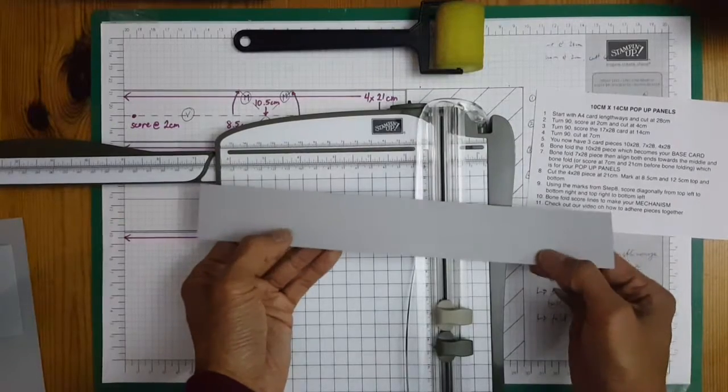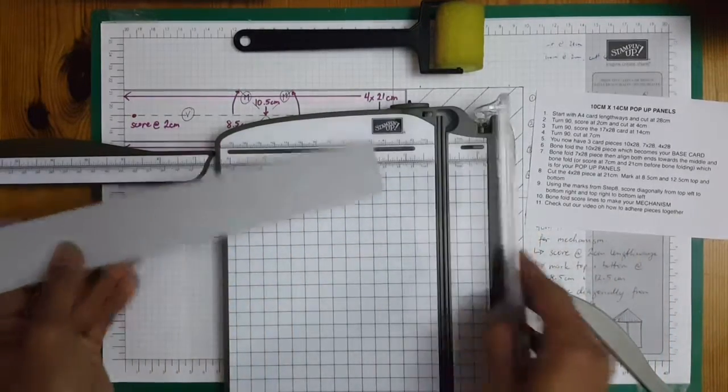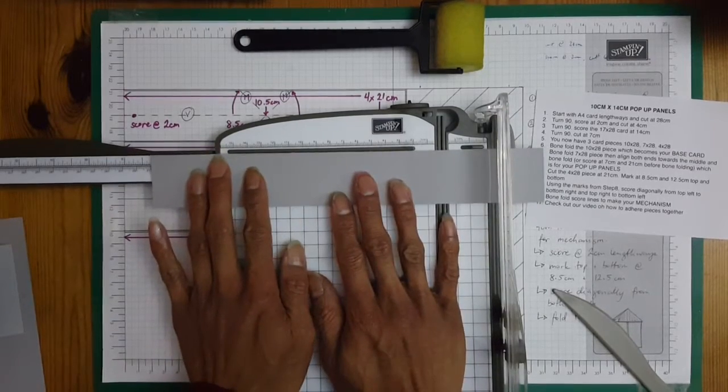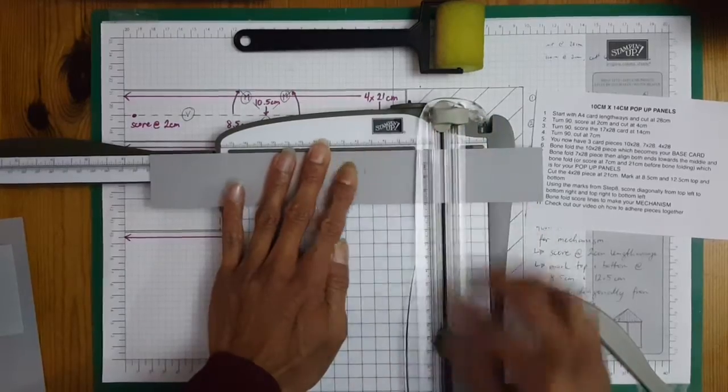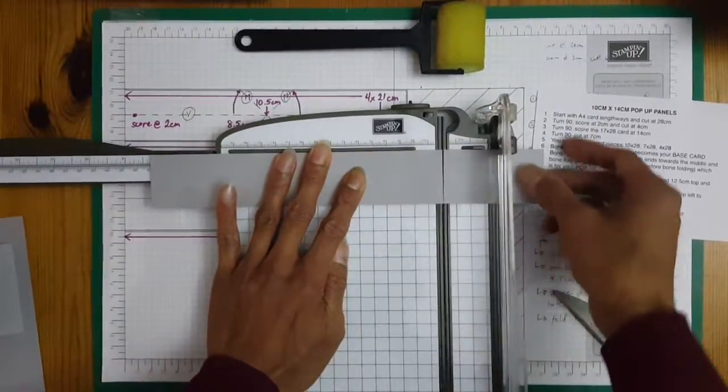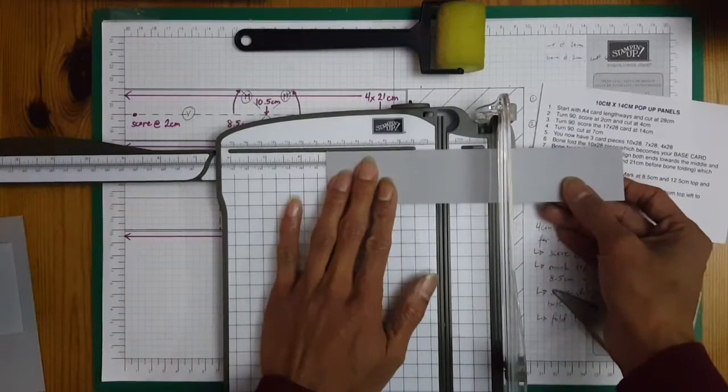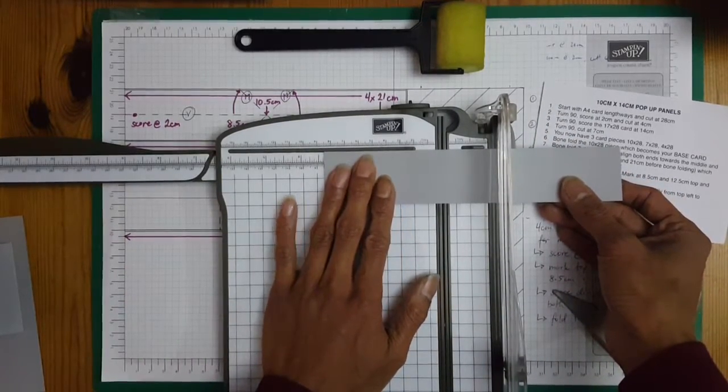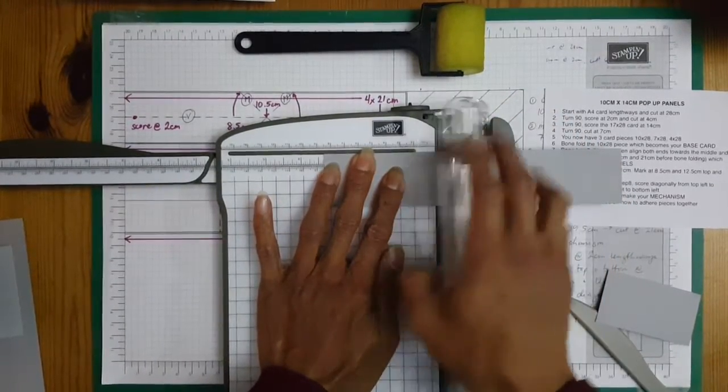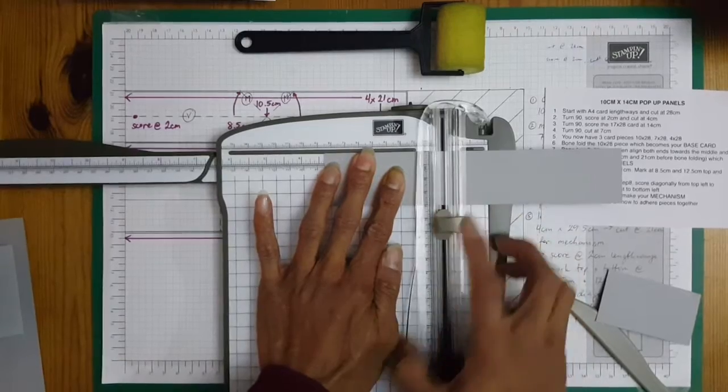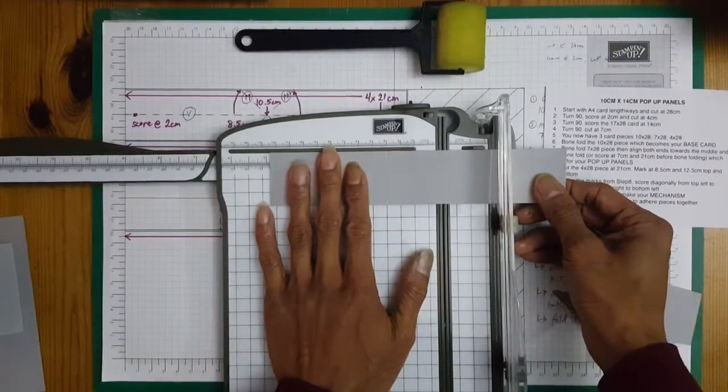So for the mechanism, we cut that at 21 centimeters. Mark at 8.5 the top and the bottom. So just lightly mark it.